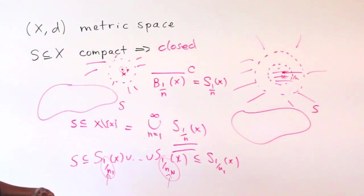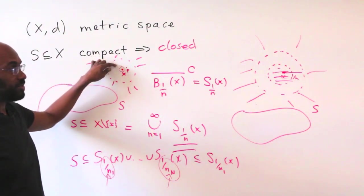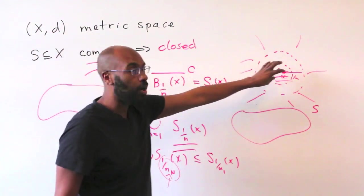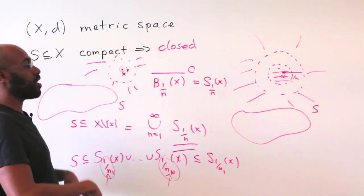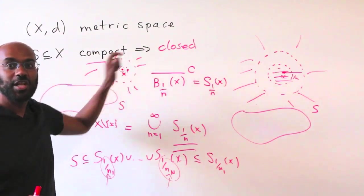Okay, so what did we just do here? We picked the point X to begin with that was outside of S and we found an open ball around it that sits outside of S as well. So that means that S complement is open, which means that S itself is closed.